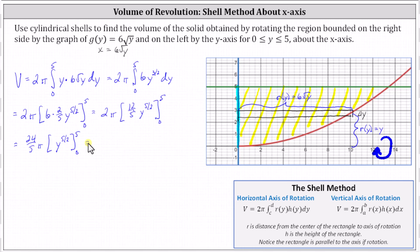And now we determine 24π/5 times the difference of F(5) and F(0). Well, F(5) equals 5 to the power of 5/2, minus F(0) which equals zero.